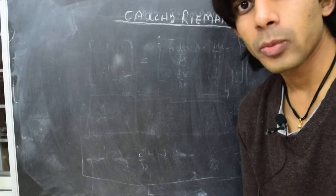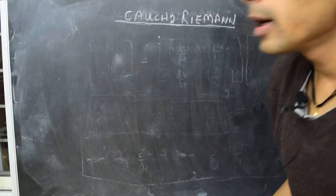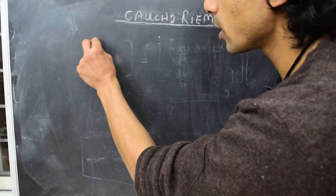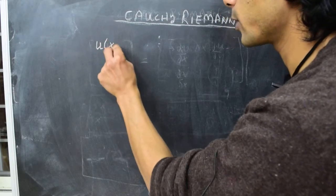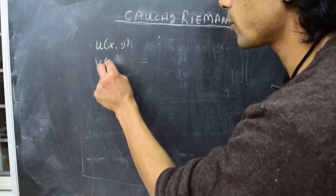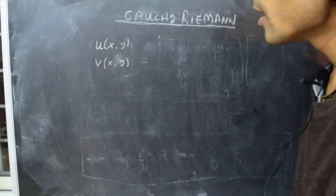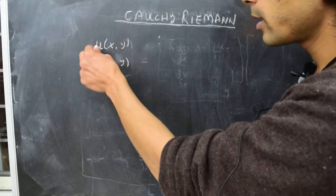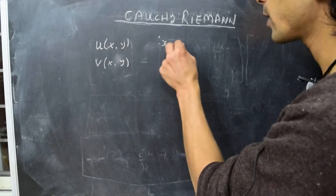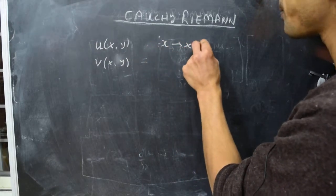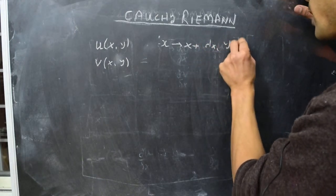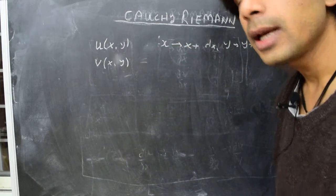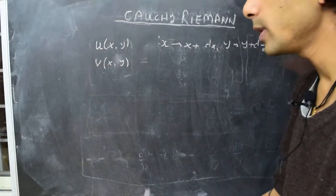Let's begin with the first method. Suppose we have two scalar functions: u, which is a function of x and y, and v, which is also a function of x and y. These are two scalar fields over two real variables. We want to calculate the changes in u and v as we move from the point (x, y) to (x + dx, y + dy), moving infinitesimally in the Cartesian plane.